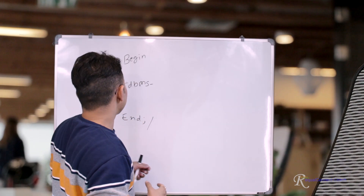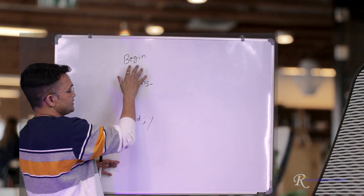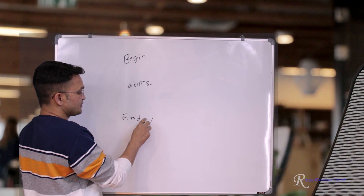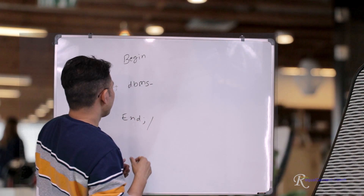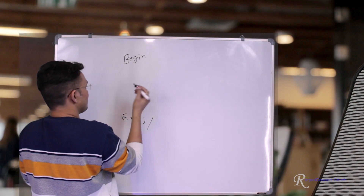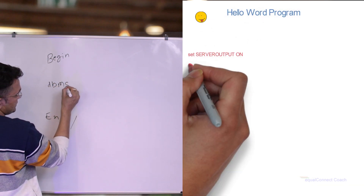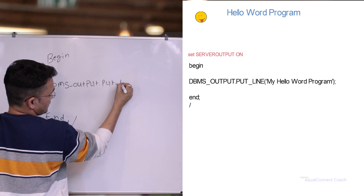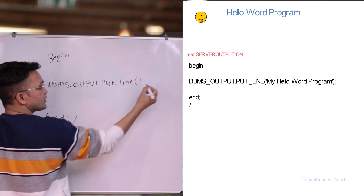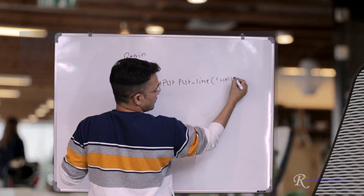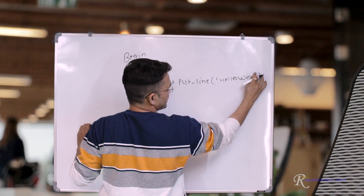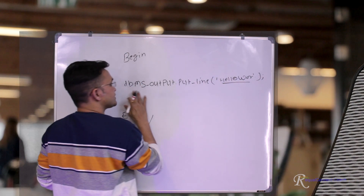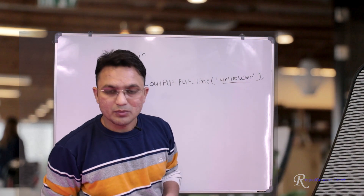To write the hello world program, as you can see on the board, we simply need to write 'BEGIN' and then 'END' followed by a semicolon. The delimiter shows the end of the program or end of the line. To print hello world you write 'DBMS_OUTPUT.PUT_LINE' and then in single quotes write 'Hello World', followed by a semicolon. This is how you print any statement in your PL/SQL program.